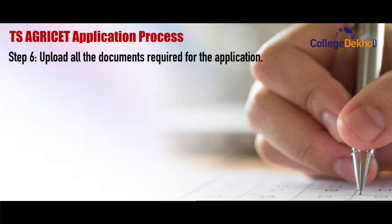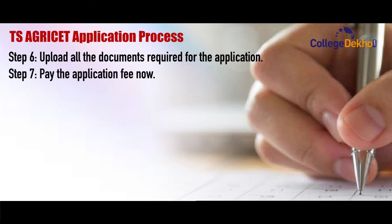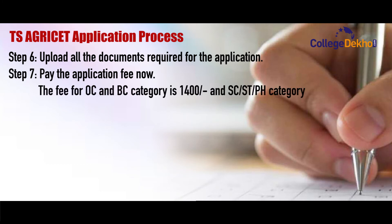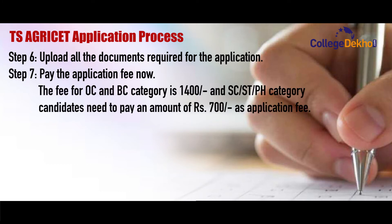In step 6, upload all the documents required for the application. Pay the application fee now. The fee for OC and BC category is Rs. 1400, and SC, ST, PH category candidates need to pay an amount of Rs. 700 as application fee.